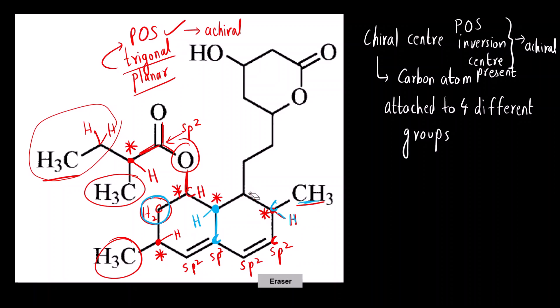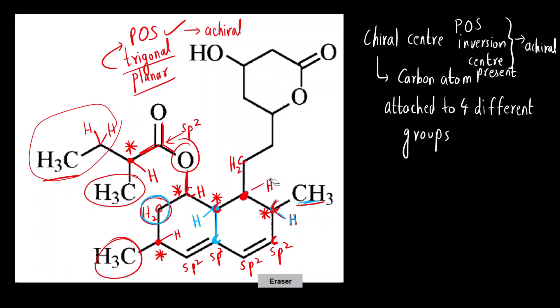Now let's look at this next chiral center. Is it chiral? Again, going around the ring: here there is CH₂, here there is CHCH₃, here there is CH, and then there is a hydrogen. So this is also a chiral center.